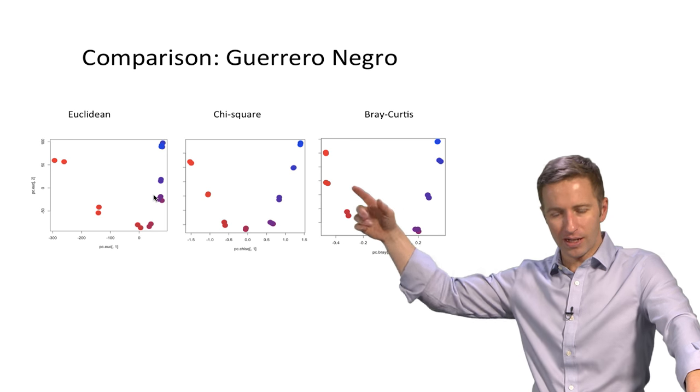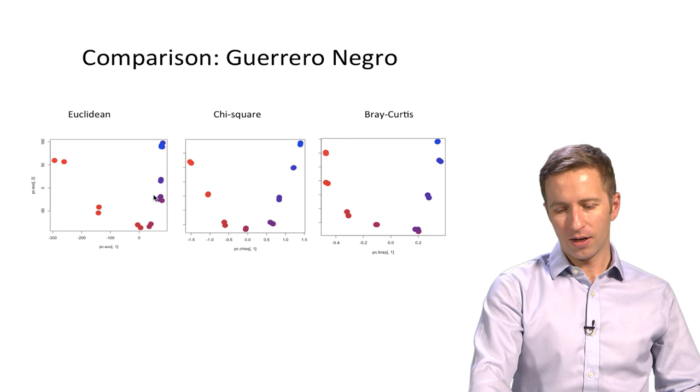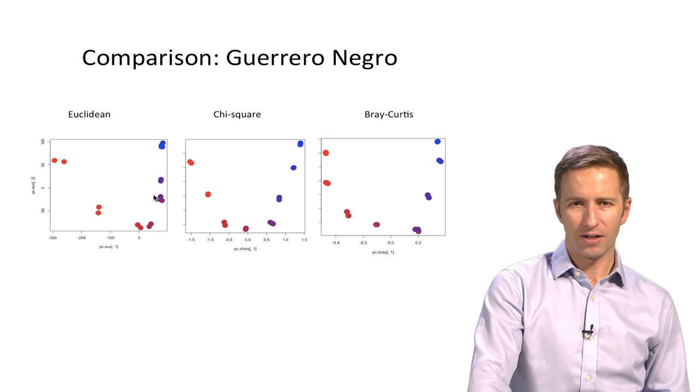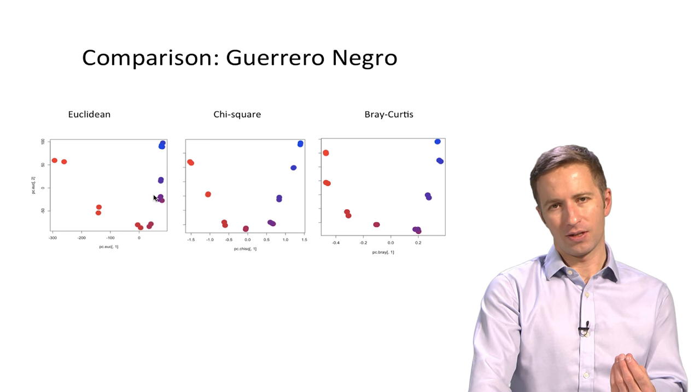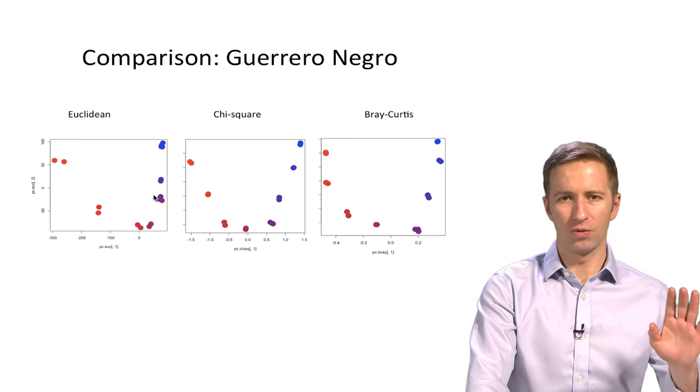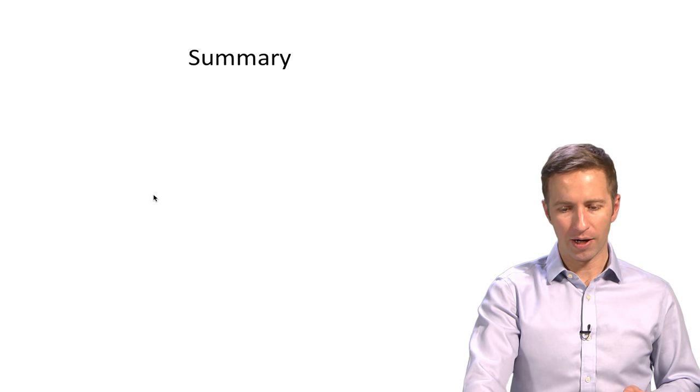And that's chi-square. So Euclidean has a bunch compressed on the blue end. And Bray-Curtis also has some compressed on the blue end as well. So chi-square is actually really good at identifying gradients in data. And it's the distance metric that underlies correspondence analysis, which is an ordination technique we'll talk about later. But the main takeaway is if you've got gradients, you might want to try chi-square.